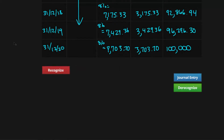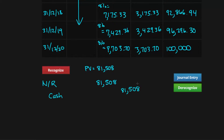Last time we recognized the note at fair value, or the present value of the cash flows. The present value at the top was eighty-one thousand five hundred and eight, so we reported a debit of note receivable with a balance of eighty-one thousand five hundred and eight, and we gave up cash of eighty-one thousand five hundred and eight.